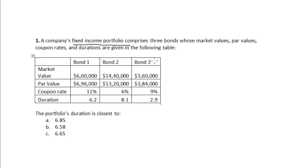A company's fixed income portfolio comprises three bonds whose market value, par value, coupon rates, and durations are given in the following table. For bond one, the market value is six lakh dollars; for bond two, it is fourteen lakh forty thousand dollars; and for bond three, it is three lakh sixty thousand dollars. The par value, coupon rate, and individual duration of each bond are also given.